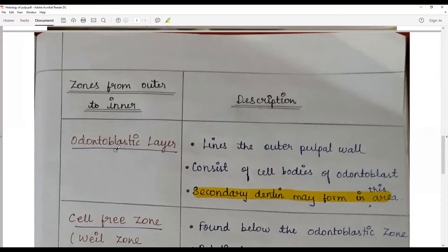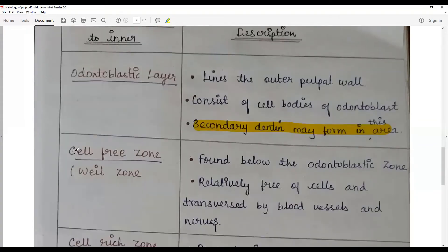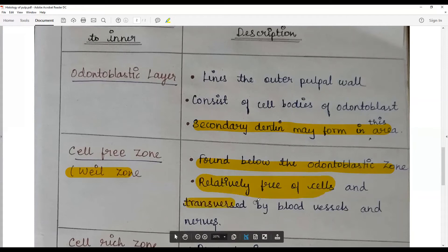Cell-free zone or Weil zone found immediately below the odontoblastic zone, relatively free of cells. It is not totally free of cells, relatively free of cells and is traversed by blood vessels and nerves, has a lot of ground substances.